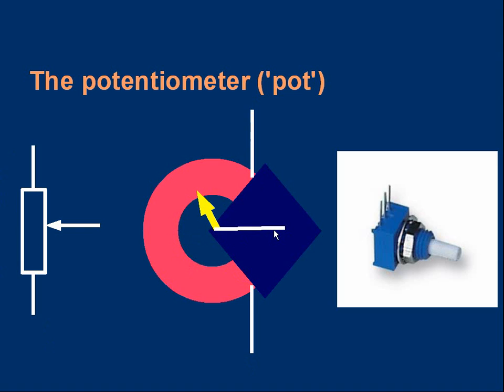If you look at the picture of a typical pot, you'll note there are three connections. The outer ones correspond to the end of the tracks, and the middle one corresponds to the movable contact, often called the slider.